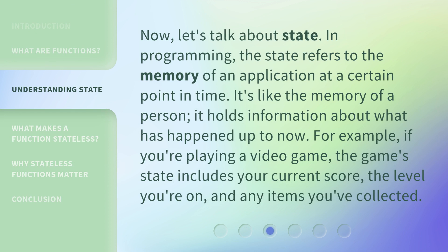Now, let's talk about state. In programming, the state refers to the memory of an application at a certain point in time. It's like the memory of a person — it holds information about what has happened up to now. For example, if you're playing a video game, the game's state includes your current score, the level you're on, and any items you've collected.